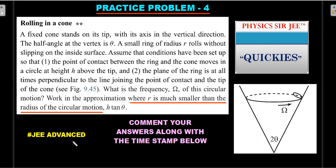Practice problem four is slightly tougher — still at JEE Advanced level, comparable to 2020-style questions. It involves a rolling object inside the surface of a fixed cone. What keeps it in the JEE Advanced range is that the small radius r of the disc is much smaller than the radius of its circular motion, so it's solvable using JEE concepts. Read carefully, comment your answer with a timestamp, and I'll respond or make a video in the Quickies series.